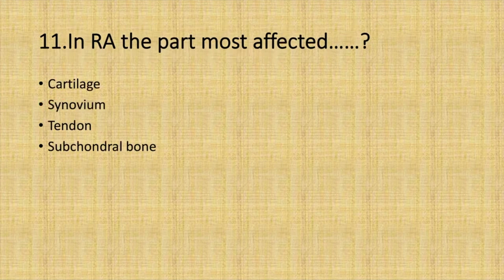In Rheumatoid arthritis, the part most affected: Option A. Cartilage. Option B. Synovium. Option C. Tendon. Option D. Subchondral bone. Answer: Option B. Synovium.